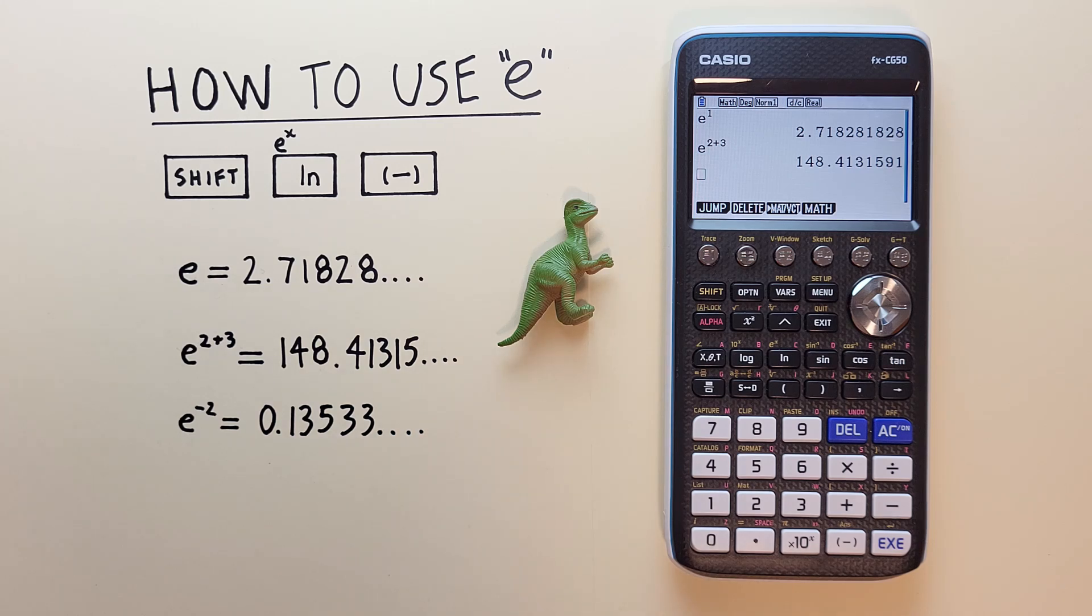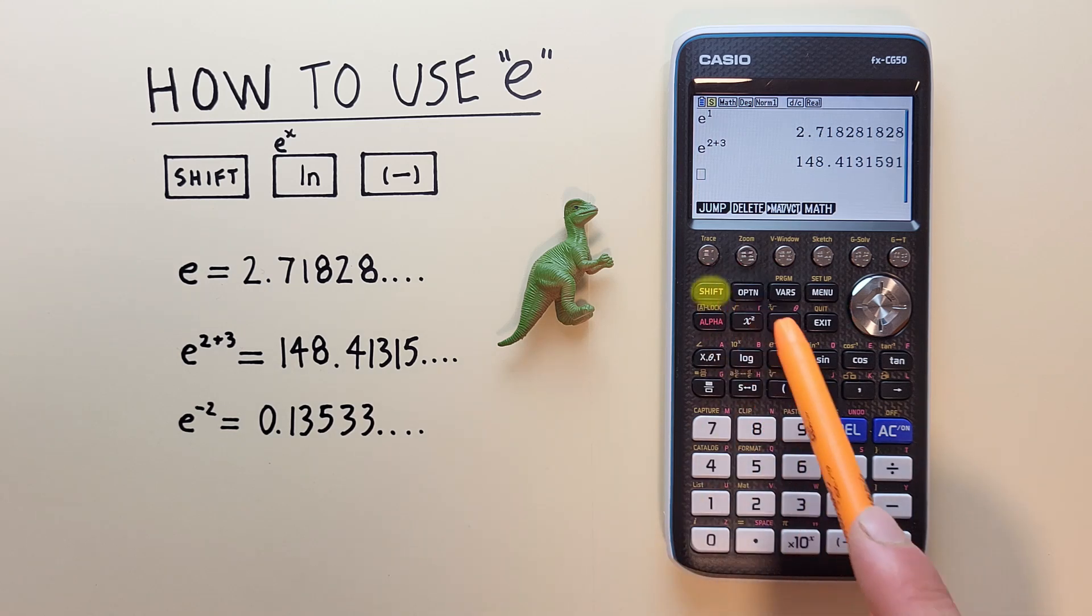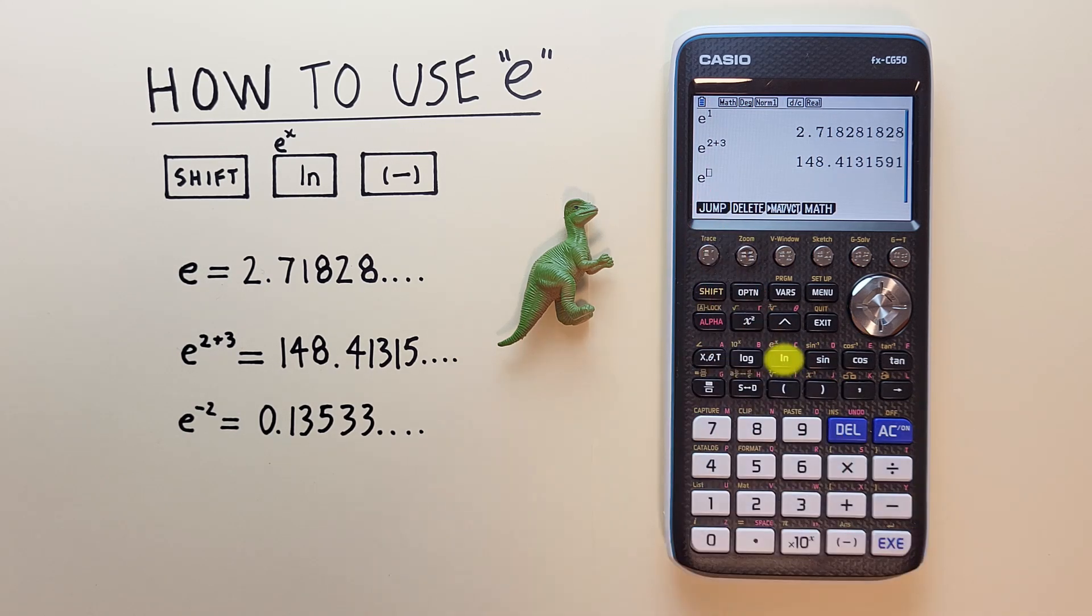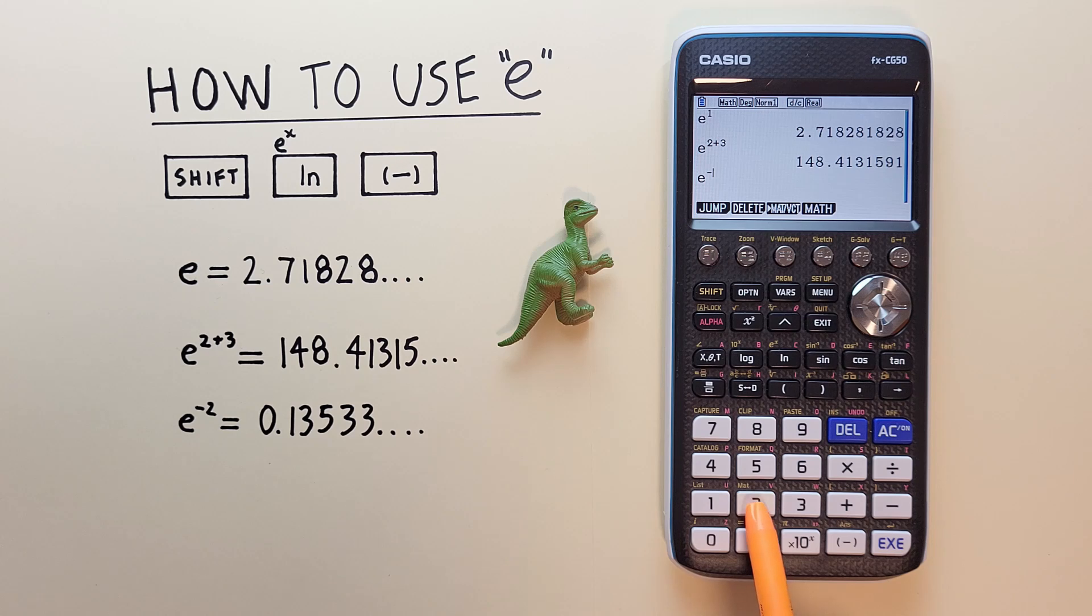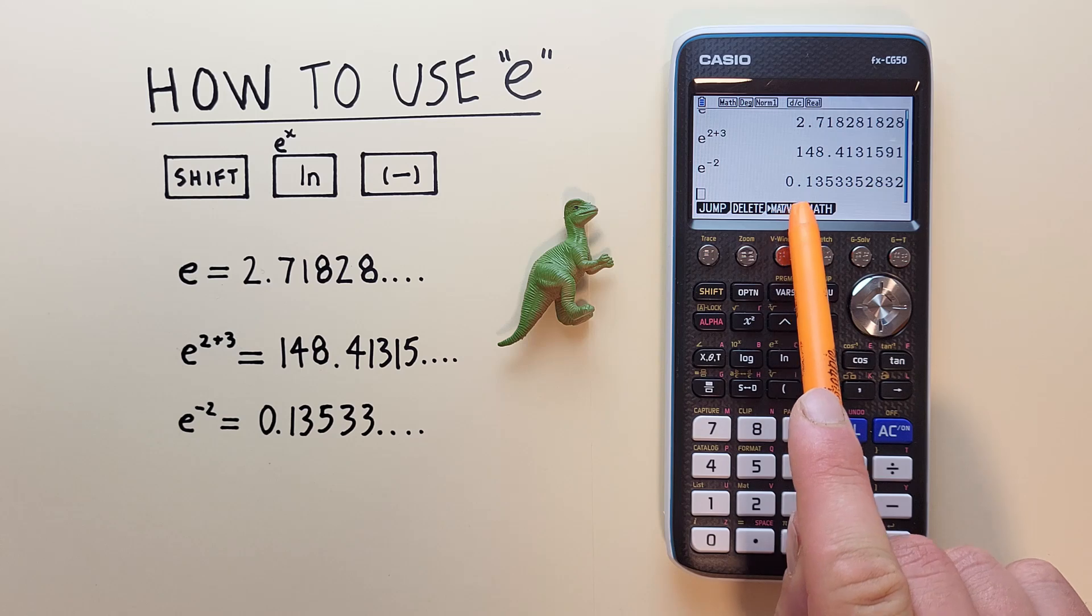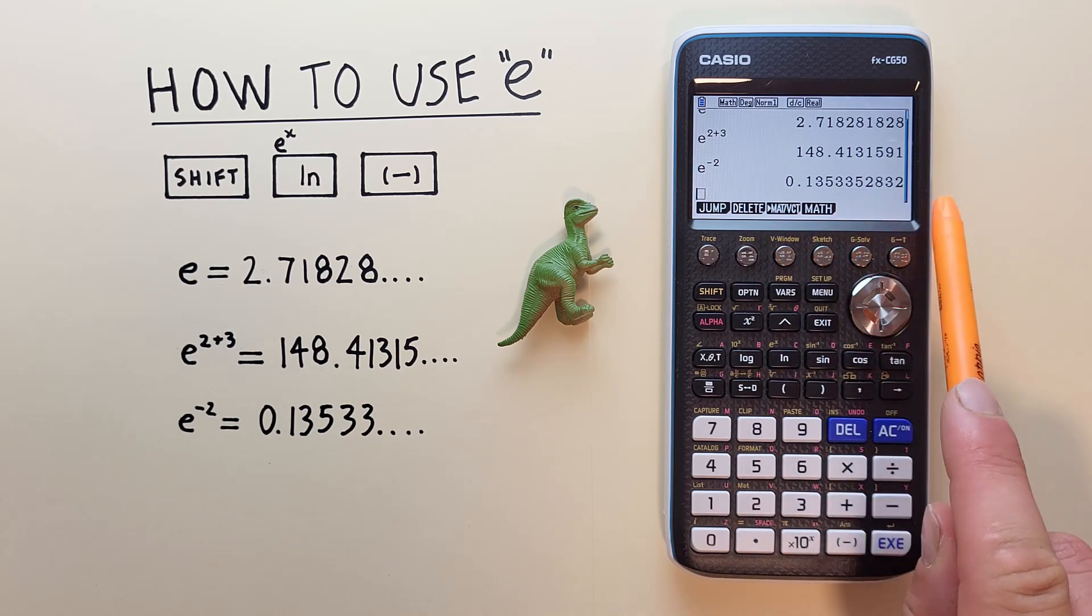What if we want a negative exponent with our e? Well, again, we start with the shift ln, or natural log key, and then we need to tell our calculator this is a negative exponent. So we use the negative key down here, not the subtraction key, the negative one here in brackets. There we go. And then we have a negative 2, so we hit 2, and hit exe, and we get 0.13533 etc, which is correct.